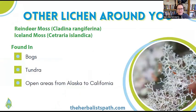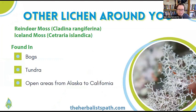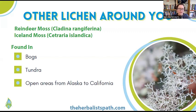You also have other lichen around you like reindeer moss and Iceland moss. I didn't find as much medicinal potency in those as I know usnea and lungwort to be. I definitely recommend checking out Janice Schofield's book to learn more. You'll typically find these in open areas, in bogs, in the tundra, and in forests from Alaska all the way down to Northern California.